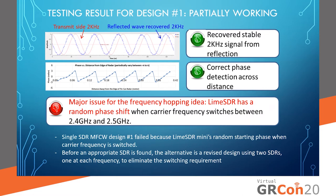Here are my results for my first design. I was able to successfully recover the 2 kilohertz signal even after being reflected, and detected the correct phase across the tested distance. However, the major issue was that my frequency hopping idea did not work. This was because my specific SDR, the Lime SDR Mini, whenever it switched frequencies, the starting phase would be random or at least not predictable, which messed up my calibration. So unfortunately, I couldn't pursue this design further until finding a better SDR and had to come up with a different solution.